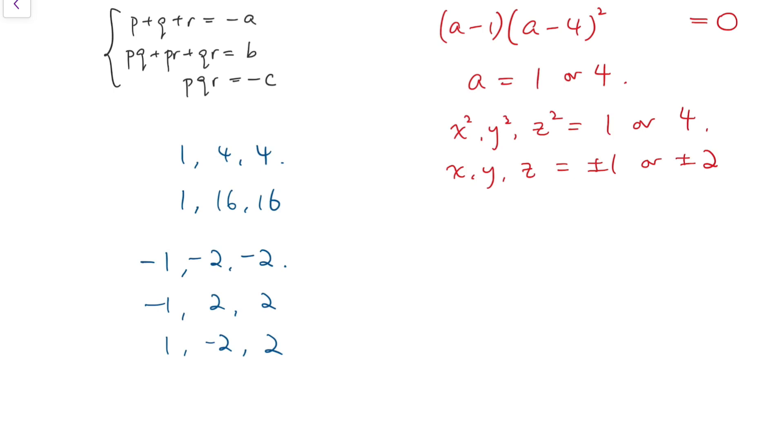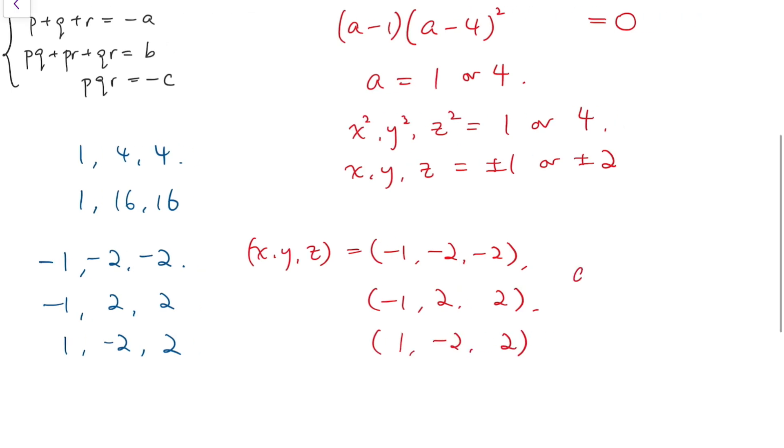For the first case, we have x, y, z equals minus 1, minus 2, and minus 2, or its permutations. For the second case, minus 1, 2, 2, and its permutations. And finally, 1, minus 2, 2, and its permutations. Altogether, there should be 12 solutions. This is the final answer.